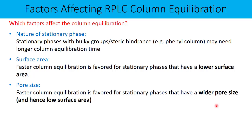For example, compare a pore size of 70 angstrom versus 400 angstrom. A column with a pore size of 400 angstrom will have a lower surface area and hence a lower column equilibration time. So, greater or wider the pore size, lower will be the column equilibration time.